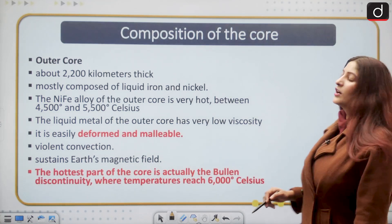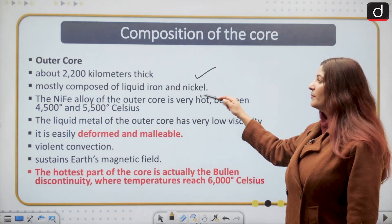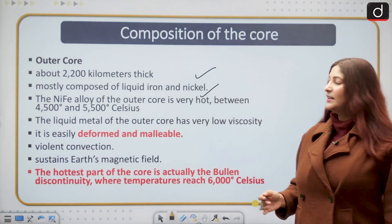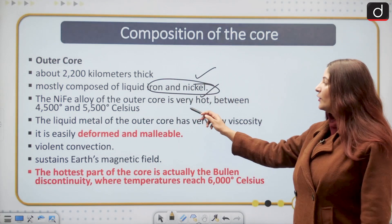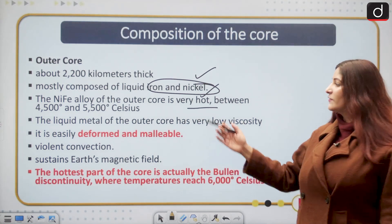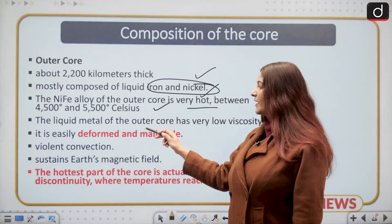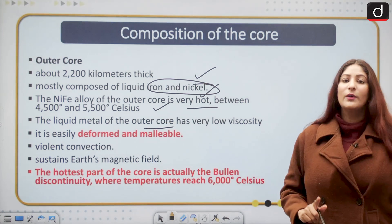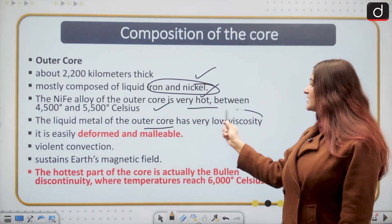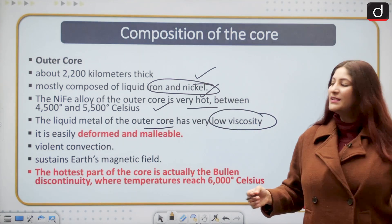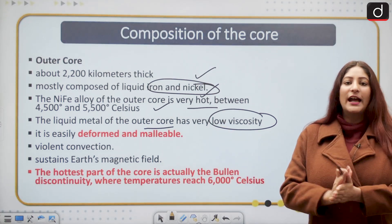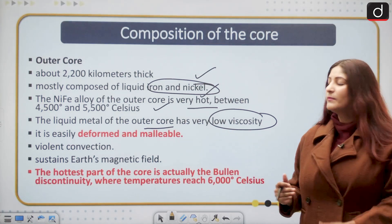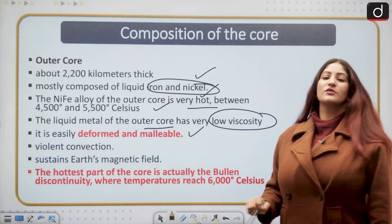If we talk about the outer core, this is about 2200 kilometers thick. It is mainly comprised of liquid iron and nickel, and the NiFe alloy of the outer core ranges from 4500 degrees Celsius to 5500 degrees Celsius. The liquid metal has very low viscosity, meaning it can be easily deformed, and it is also malleable.